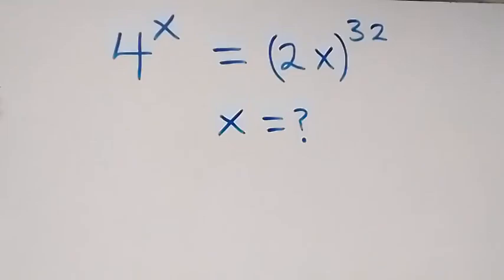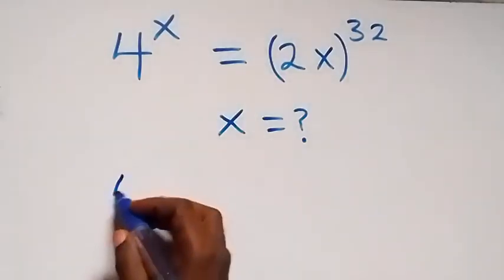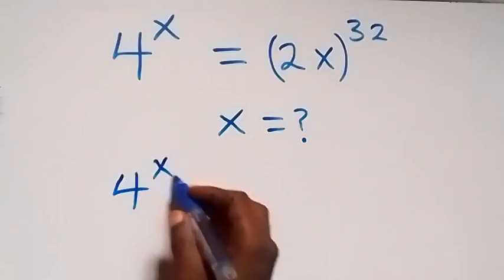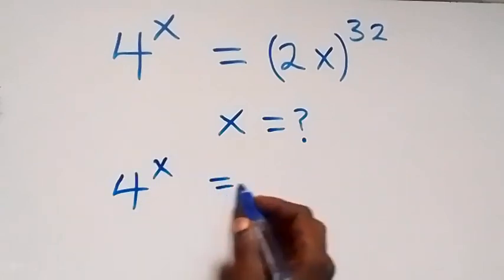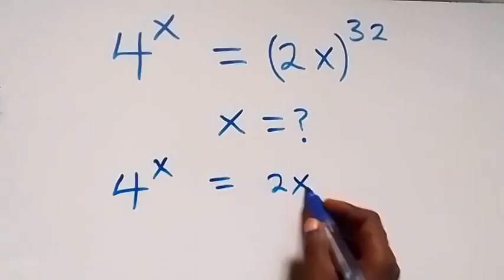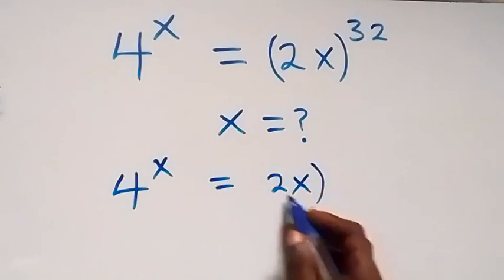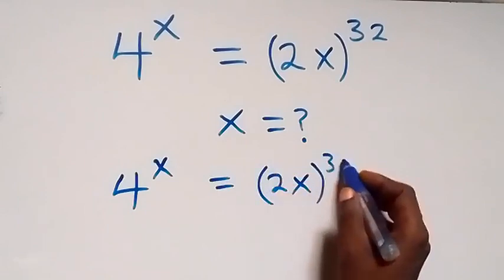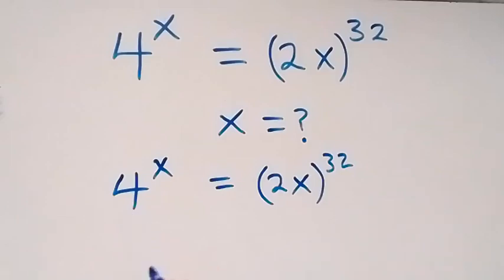Hello, you are welcome. How to solve for x in this nice exponential equation. From what is given, which is 4 raised to power x equals to (2x) raised to power 32. Here let's express 4 as 2 squared.